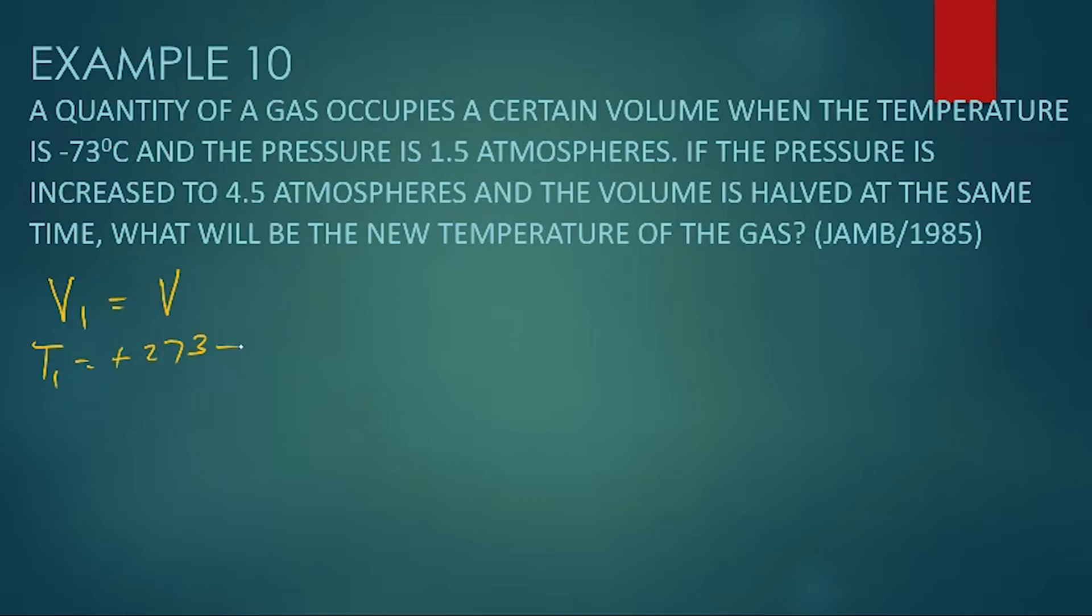T1 will give you minus 73 plus 273, because we are converting to Kelvin, and that gives you 200 Kelvin. And the pressure, that's P1, is 1.5 atmospheres.